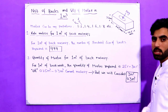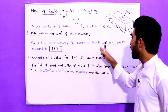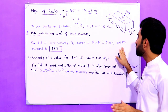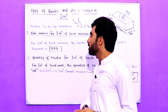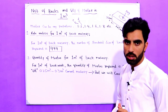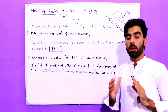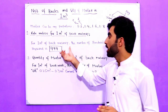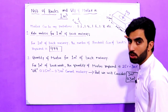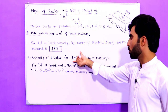For 1 meter cube of brick masonry, the standard size bricks required is 494 numbers. So for 1 meter cube of brick masonry we require 494 bricks, but the size of the brick should be standard size as I have mentioned in this video.